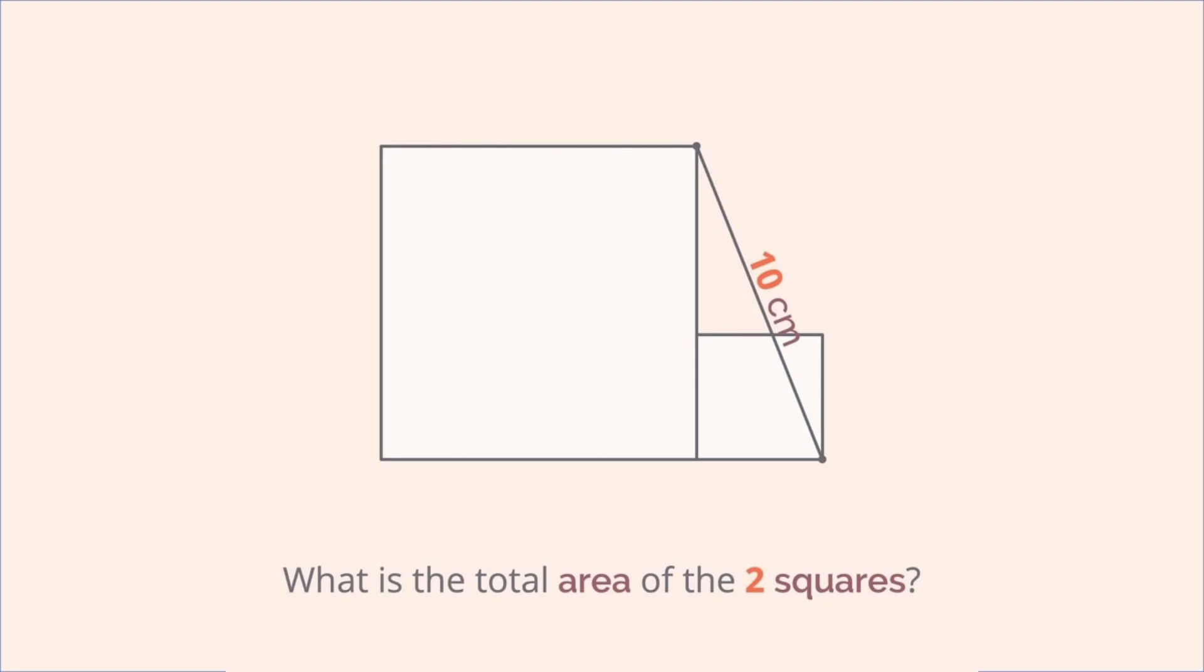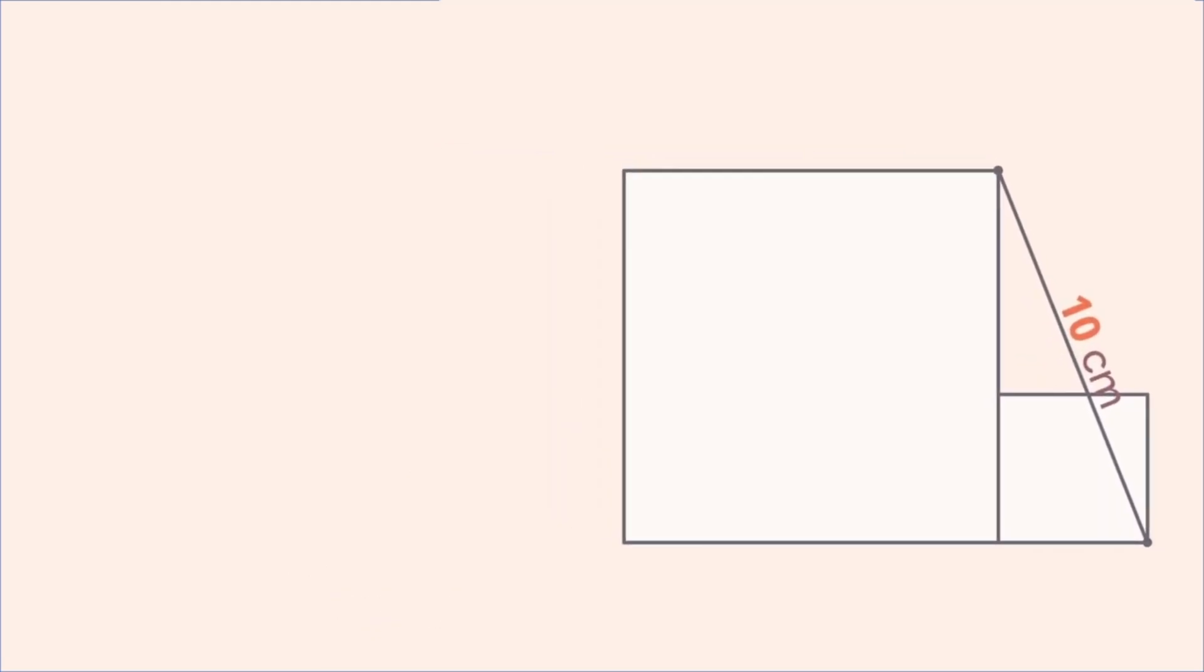Pause the video here, see what you can come up with. I'm gonna solve it this way. So, I'm gonna begin by labeling these vertices A, B, C, D, E, F, and G.